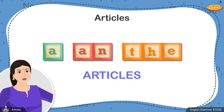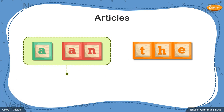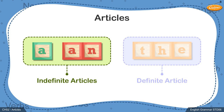There are three main articles as you can see on the board. The articles a and an are called indefinite articles. The article the, however, is called the definite article. Let's first learn all about the two indefinite articles a and an, and their usage.